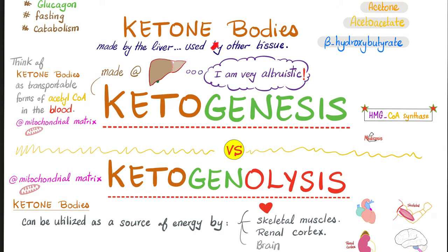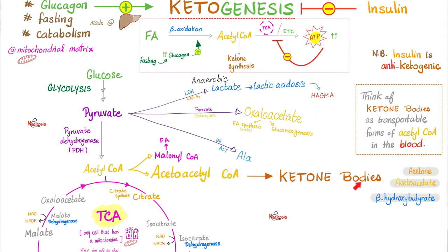Ketone bodies only exist in the glucagon world — when I am fasting, starving, or having diabetic ketoacidosis because I lack insulin. Who makes ketone bodies for you? The liver. Does the liver make ketone bodies for itself? No — the liver is very altruistic. The liver will make the ketone bodies but will not use them. Instead, it will give them to other tissues that can use those ketone bodies via ketogenolysis. These tissues include heart, skeletal muscles, kidney cortex, and the brain — but only during prolonged starvation; otherwise the brain prefers glucose. Where did ketone bodies come from? From acetyl-CoA, the queen, the centerpiece, the sun around which everything revolves.